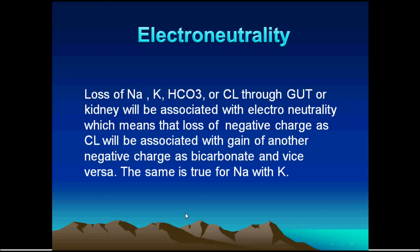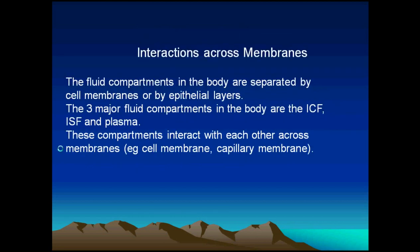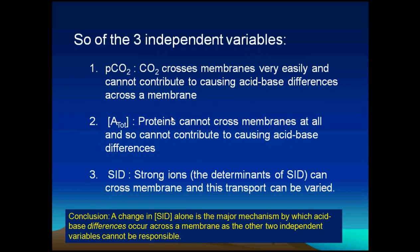Electroneutrality means that the positive charges equal the negative charges, and this is kept constant through the gastrointestinal tract, through the kidney, through the liver, and through the lung. All these organs are important to maintain the integrity of these systems. The body's large compartments are separated by cell membranes, and cell membranes are an important part of maintaining this electroneutrality.